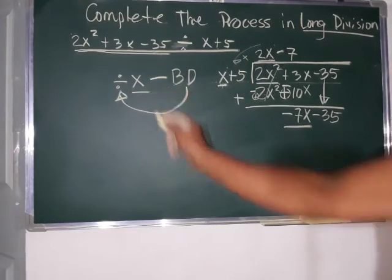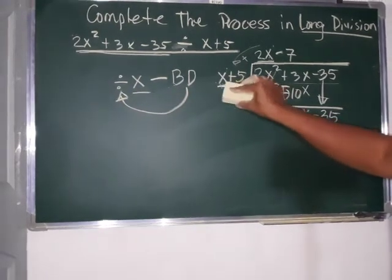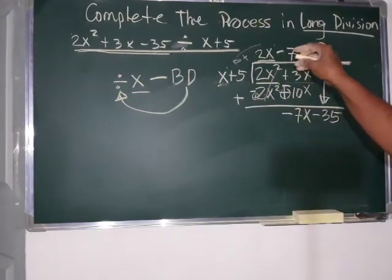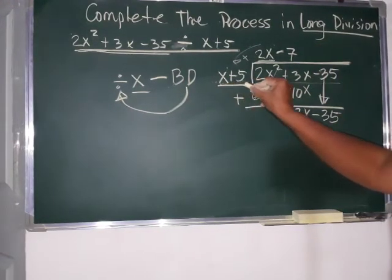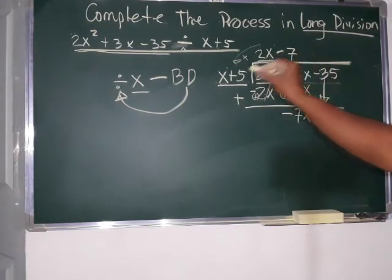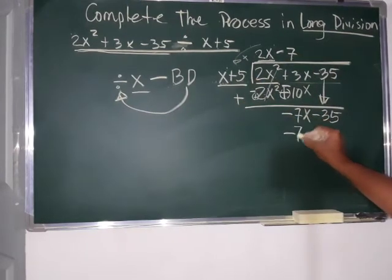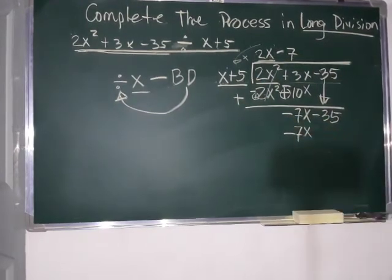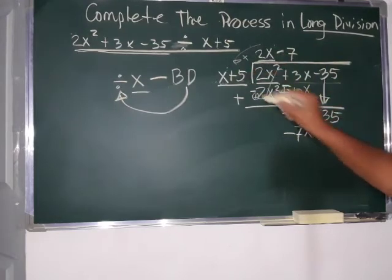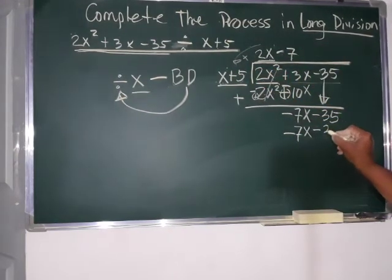Next. Proceed to multiplication. So, kung magmultiply tayo, lahat, of course, si negative 7 with all our divisor. So, negative times positive is negative. So, negative times positive is negative. 7 times x is 7x. Next. Negative times positive is negative. 7 times 5 is equal to 35.